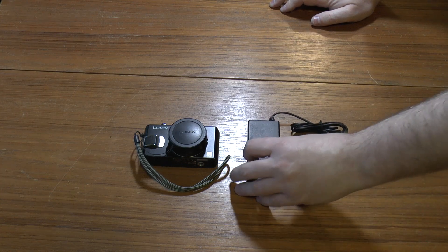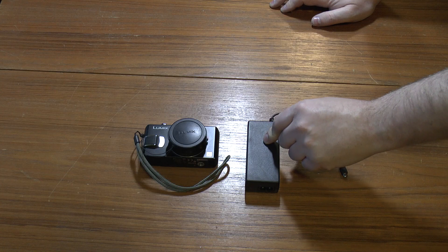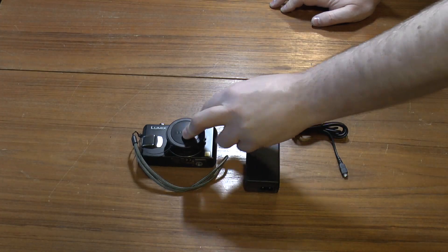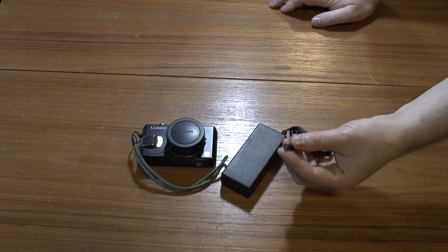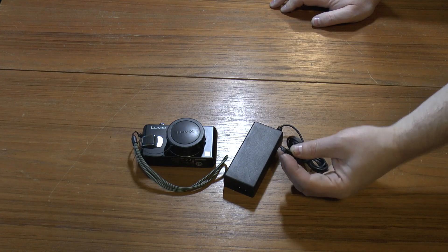This is a power supply, a 5.1 volt power supply for a Panasonic Lumix. It's 5.1 volts out, 1.1 amps and it's got this strange connection which looks like a mini USB connector.